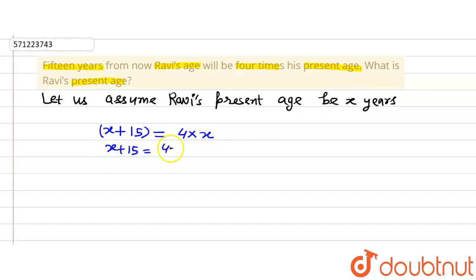We have assumed present age to be x years. Now on simplifying it further, we will get this equation: x plus 15 is equal to 4x. Now this is a linear equation and now we will solve it.